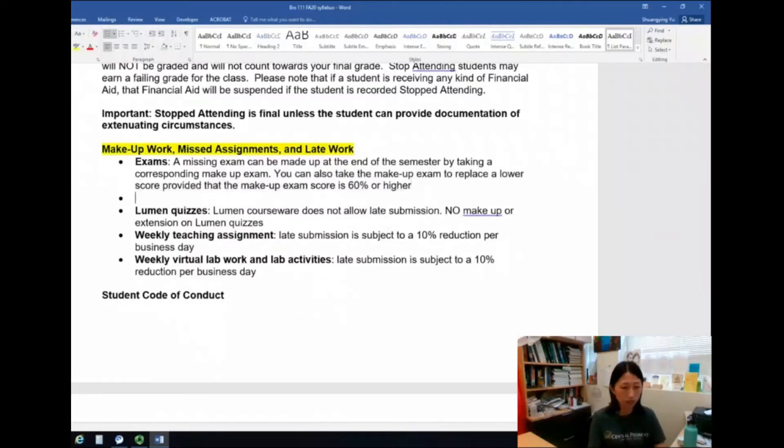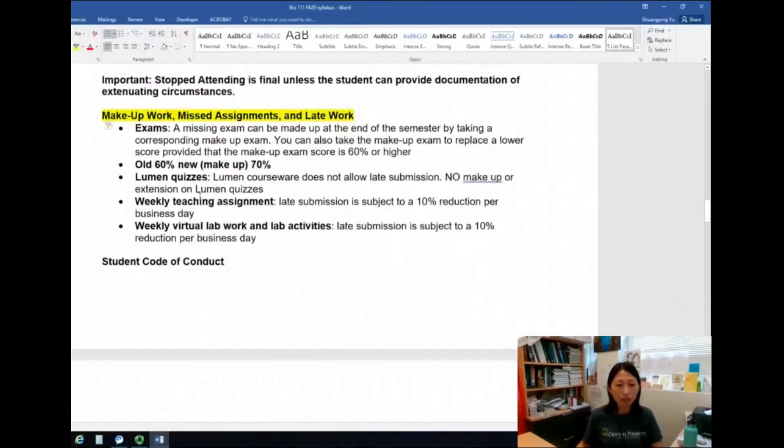Then I can replace the higher score with the lower score. So I'll put it here. For example, your old score is 60%, your new score from the make-up is 70%. Then I will replace in Blackboard the 60% with 70% so that your grade is a little bit higher. So basically it means you will have a second chance to take an exam and get a better grade. But you can only do it once. You can only make up for one exam.